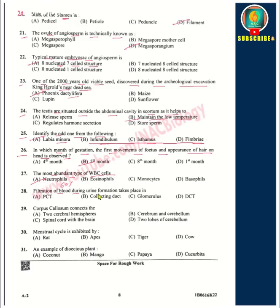28th: Filtration of blood during urine formation takes place in the glomerulus. 29th: The corpus callosum connects the two cerebral hemispheres. 30th: The menstrual cycle is exhibited by apes. 31st: An example of a dioecious plant is papaya.